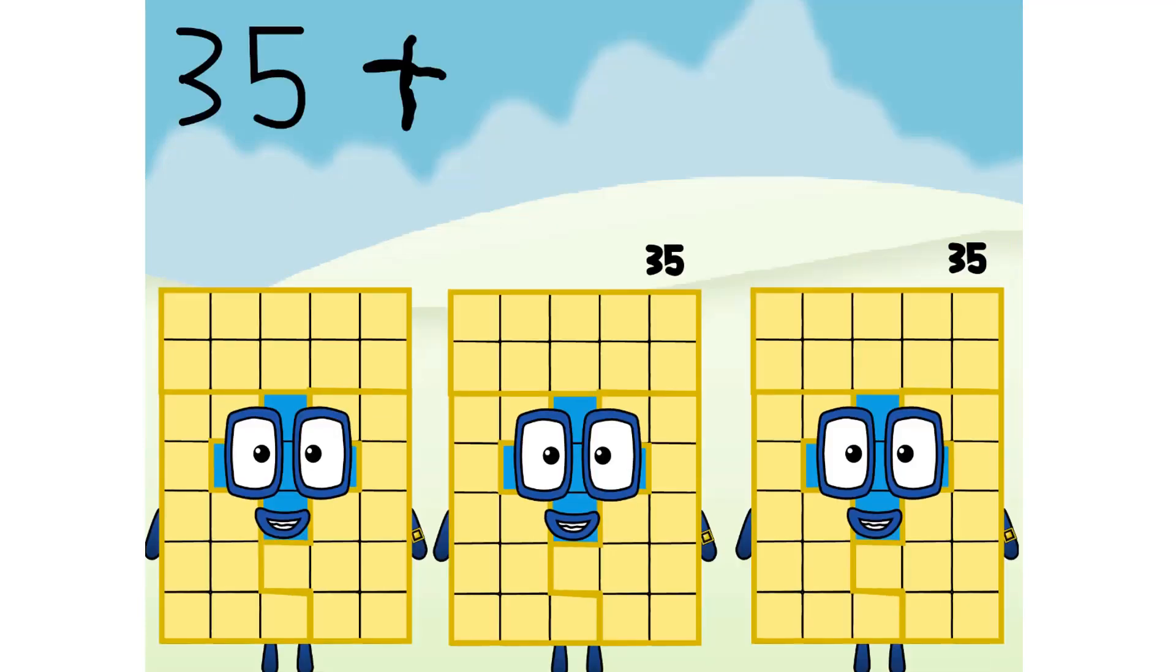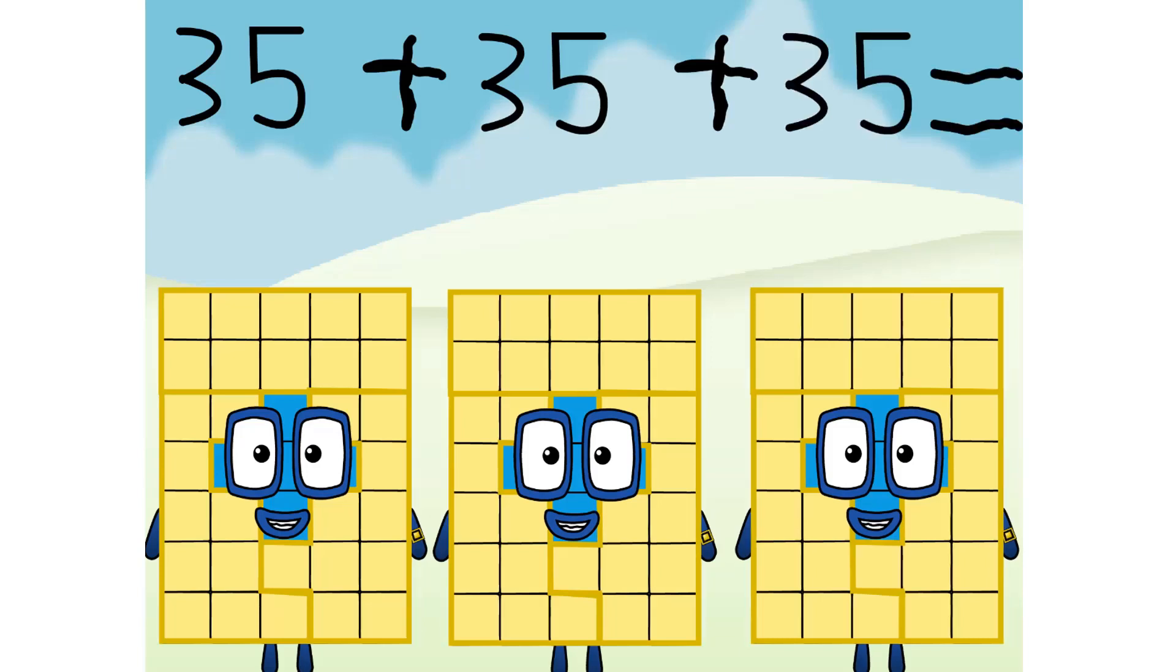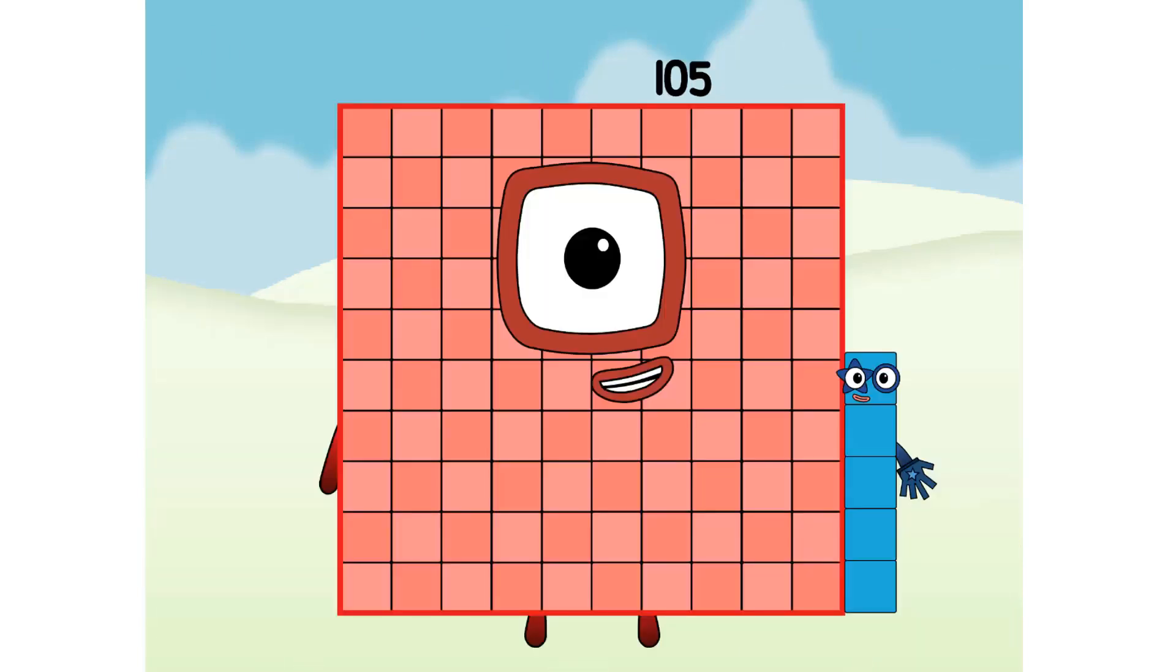Thirty-five plus thirty-five plus thirty-five equals one hundred five. I am one hundred five. And I am one hundred and five.